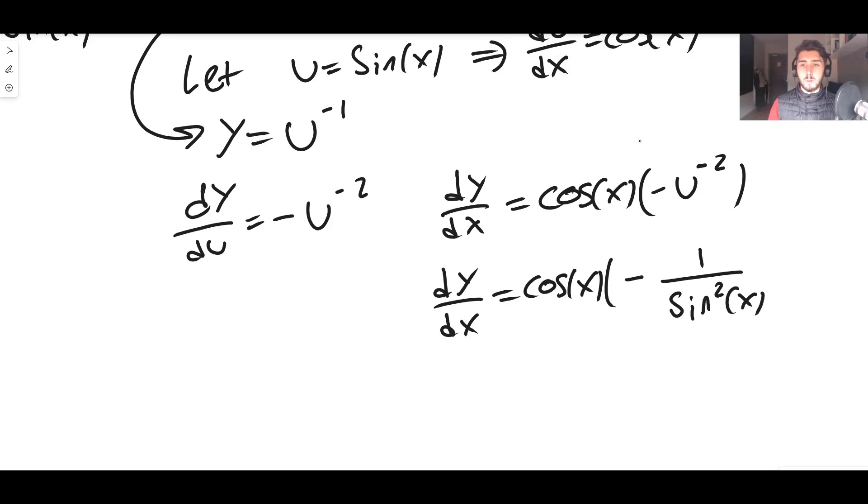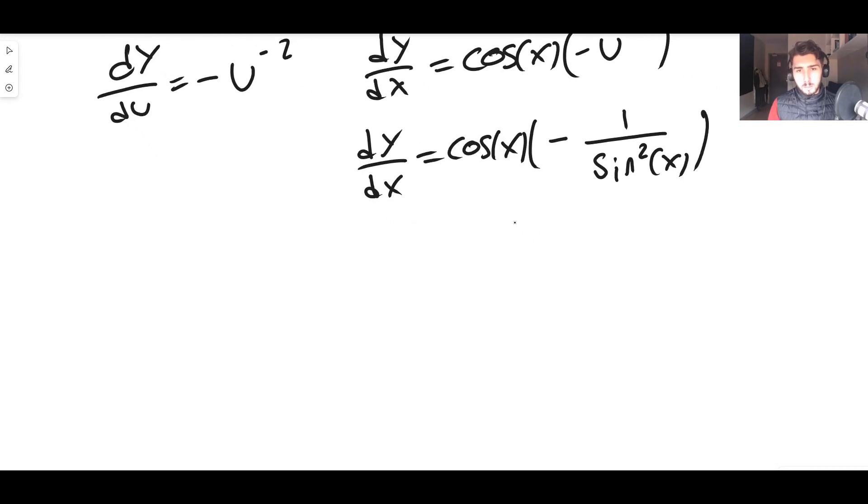That's the same thing. And then finally, we can do a little bit of rearranging. This gives us minus cos(x) divided by sin squared x.